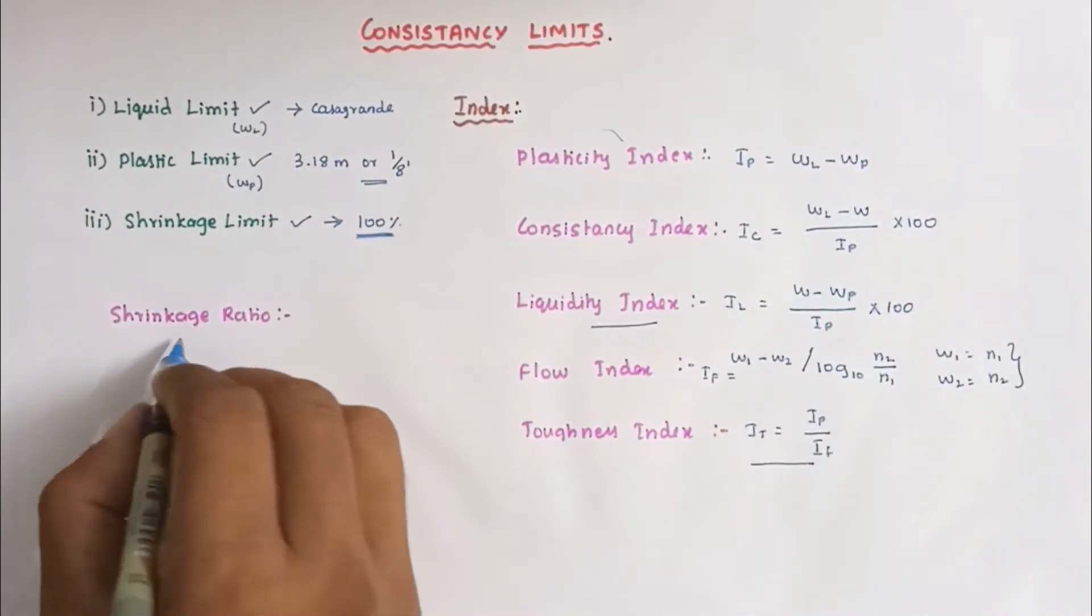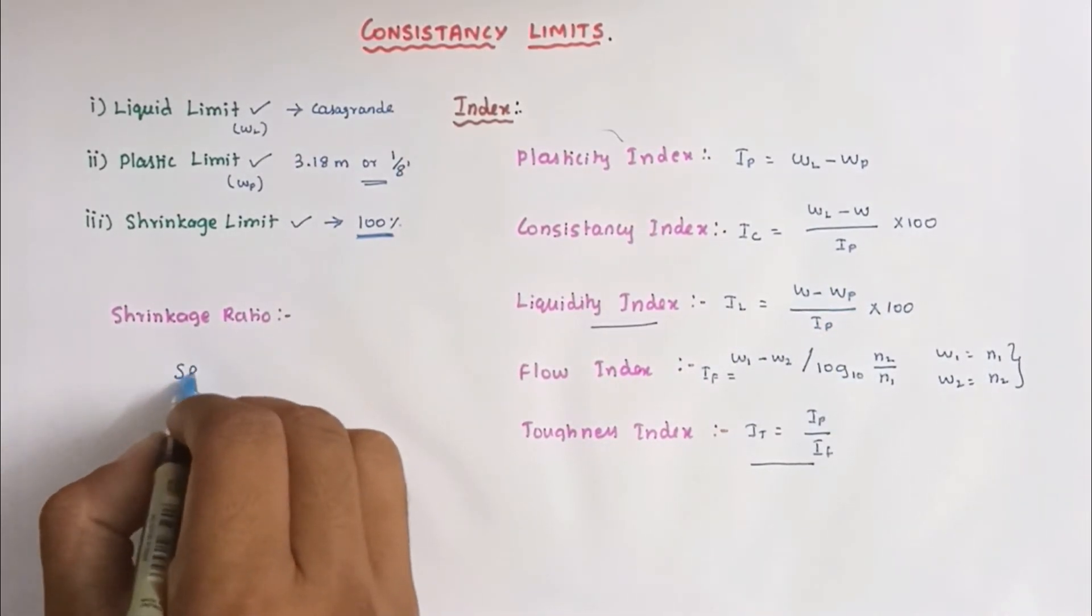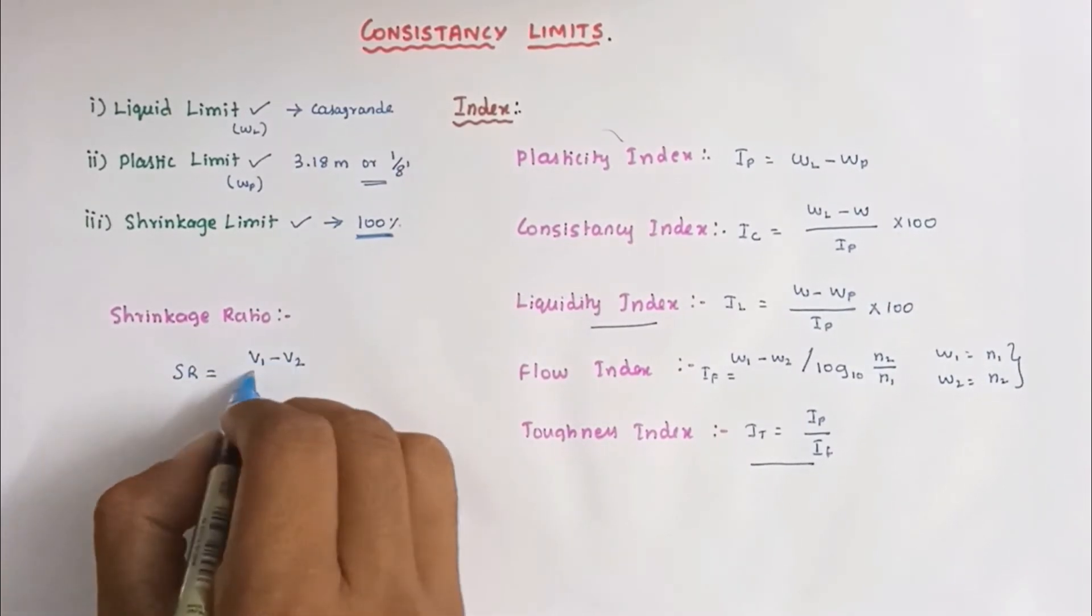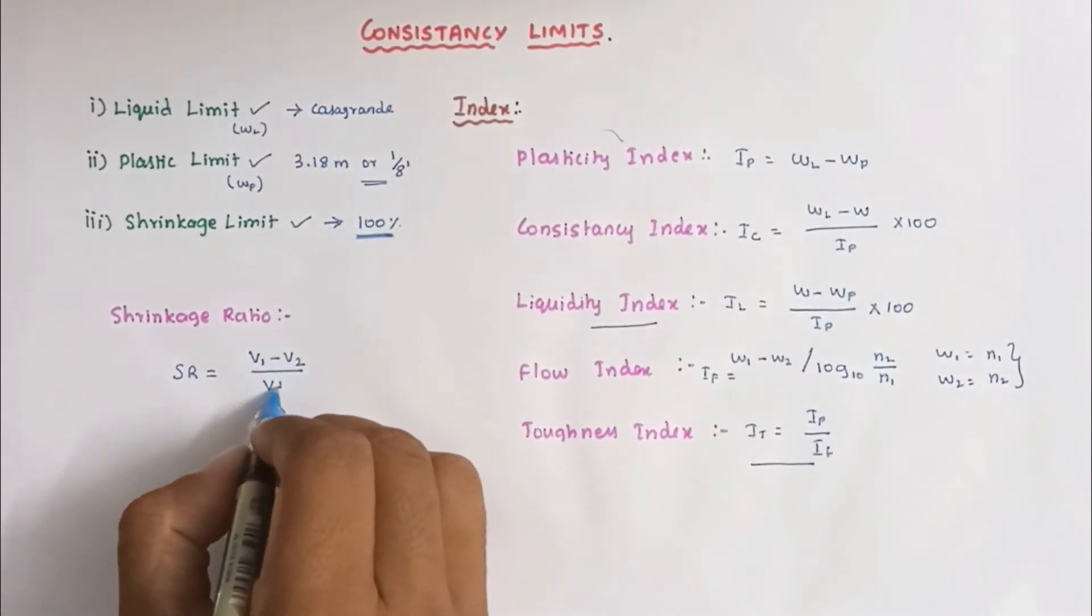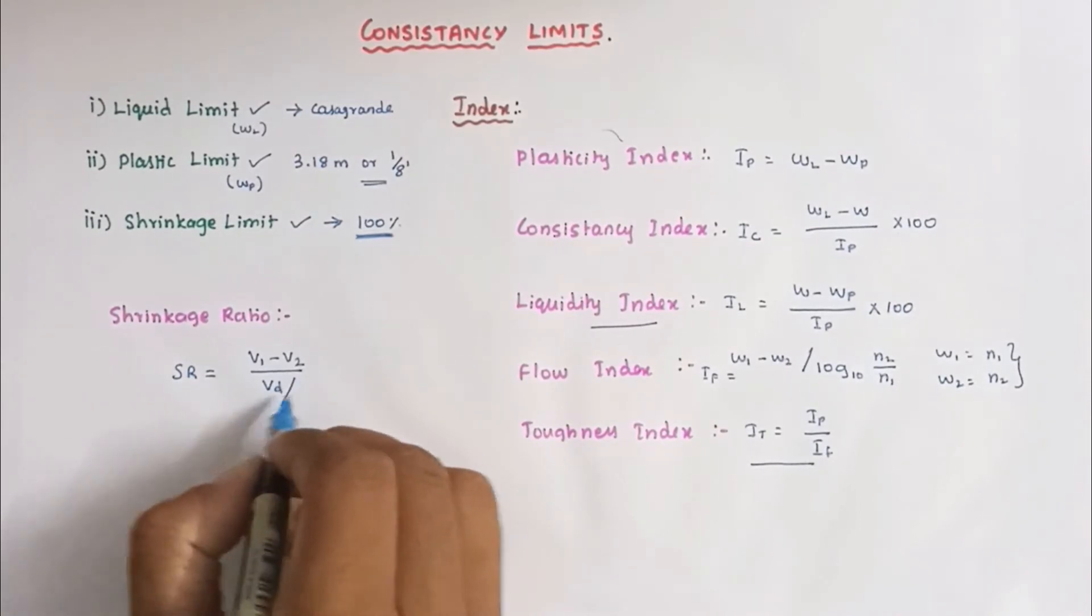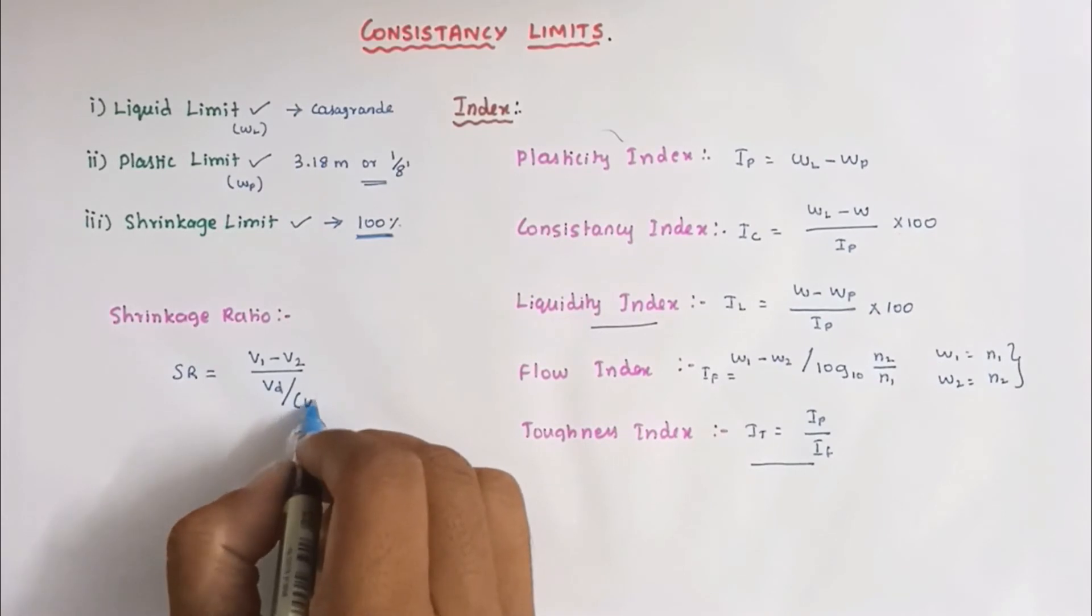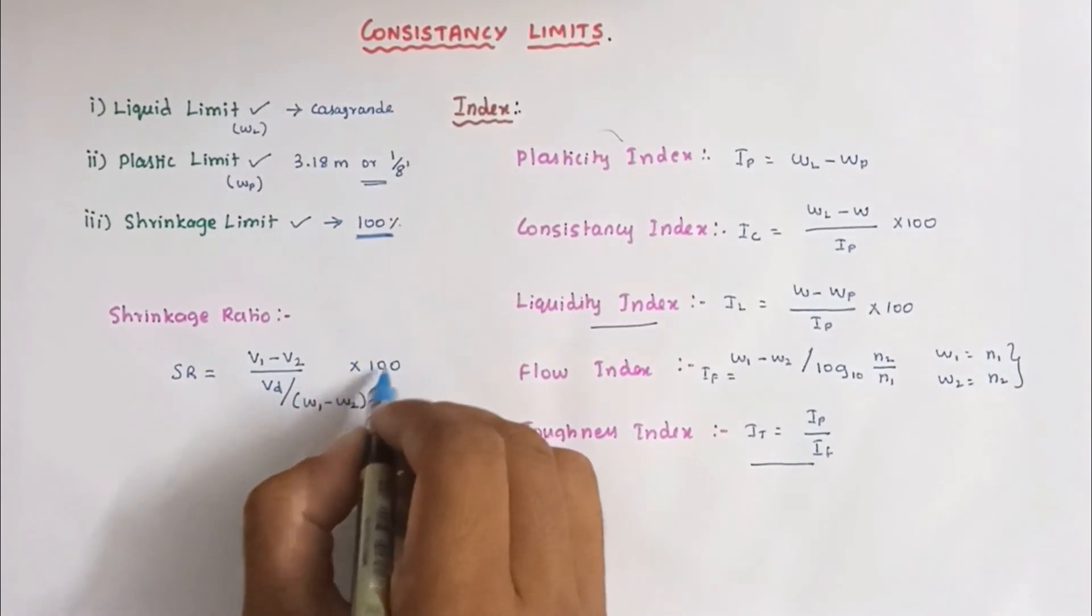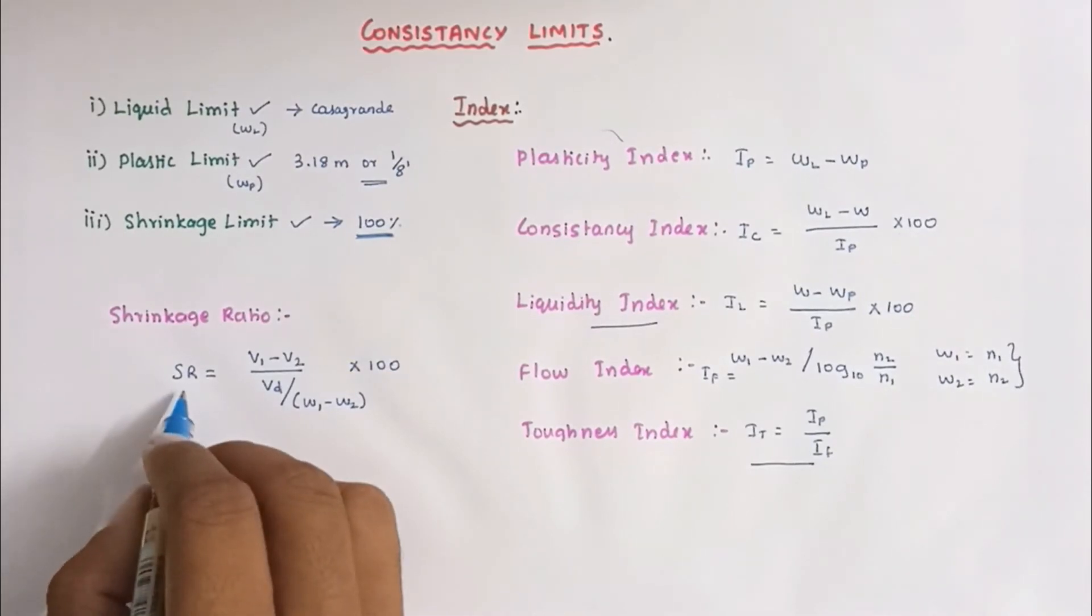Next, shrinkage ratio. Shrinkage ratio is denoted as SR. SR equals V1 minus V2 divided by W1 minus W2 into 100. This is the formula to find out the shrinkage ratio.